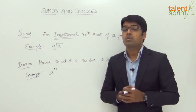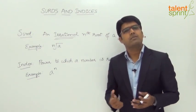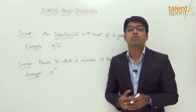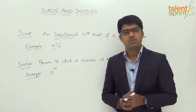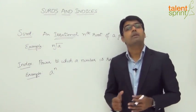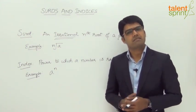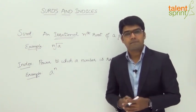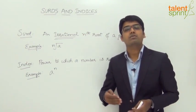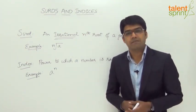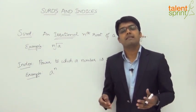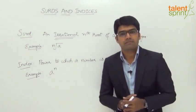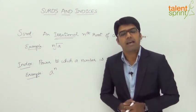For example, square root of 4 is equal to 2, so we are able to simplify this since 4 is a perfect square. Cube root of 8 equals 2 since 8 is a perfect cube. Cube root of 27 equals 3 since 27 is a perfect cube. Square root of 81 equals 9. In all these cases, the square roots and cube roots can be simplified. But there are many cases where the square roots and cube roots cannot be removed, and such numbers are known as surds.